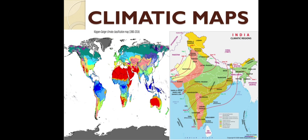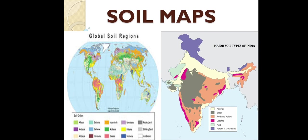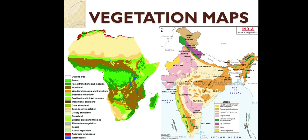Remember, the climatic map shows a long period of time. The weather map also shows conditions of temperature, pressure, wind and precipitation, but over a short period of time which may range from a day to a season. This is the basic difference: a climatic map covers a longer period whereas a weather map shows a short period. Next is the soil map, which shows various types of soil covering an area. Then the vegetation map shows the distribution of natural vegetation in an area.